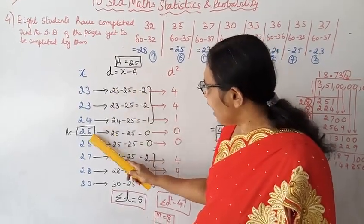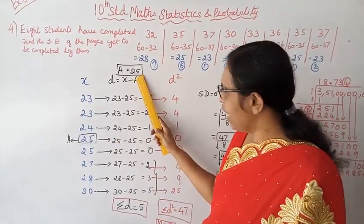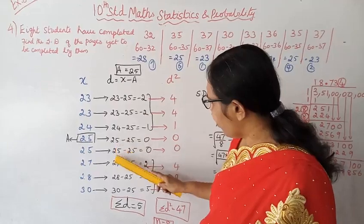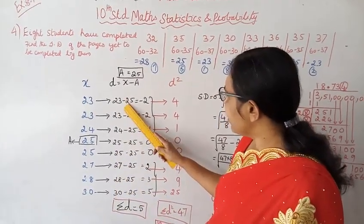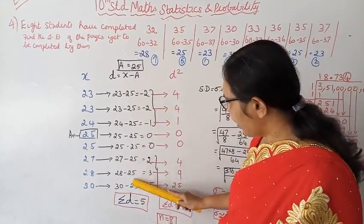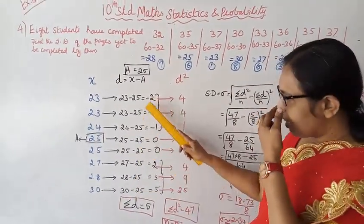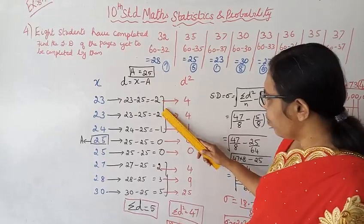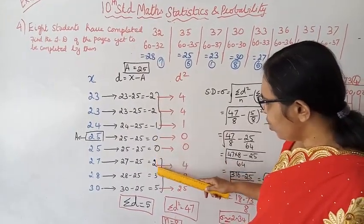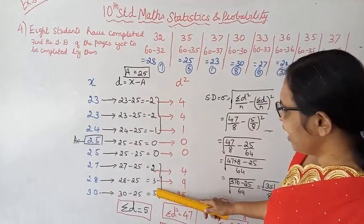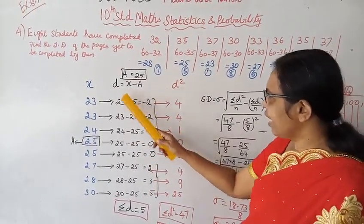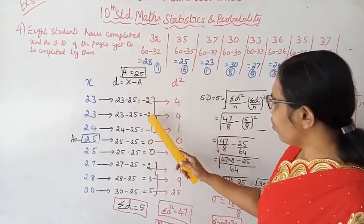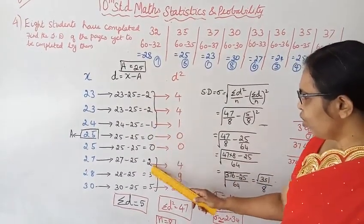Using assumed mean a equal to 25, the d values are: for 23, d = 23 − 25 = −2; for 23, d = −2; for 24, d = −1; for 25, d = 0; for 25, d = 0; for 27, d = 2; for 28, d = 3; for 30, d = 5.